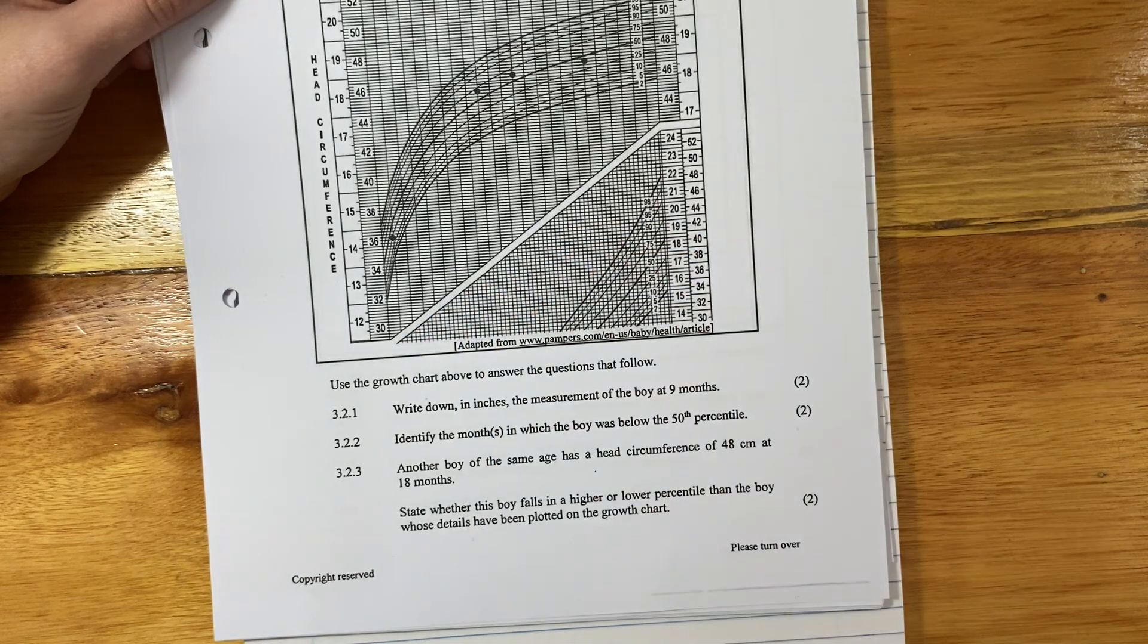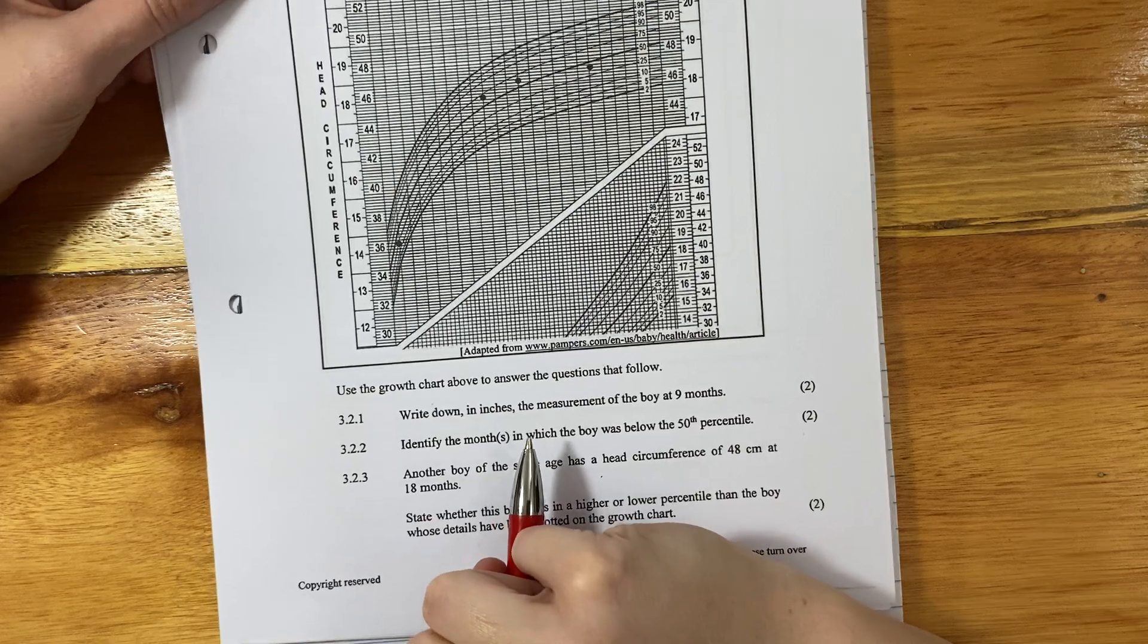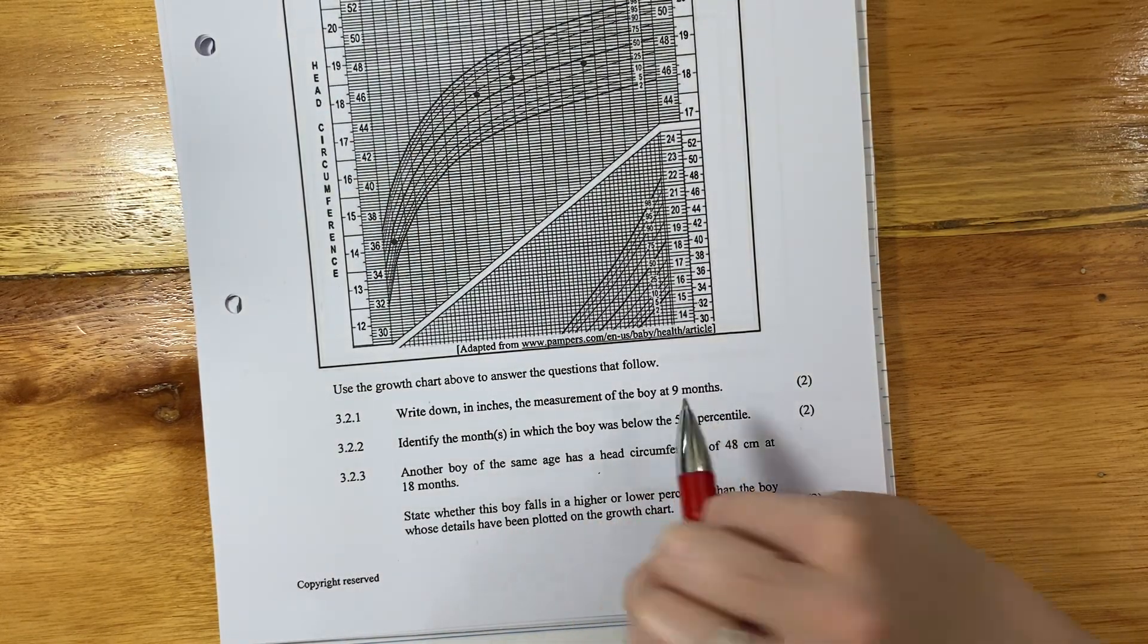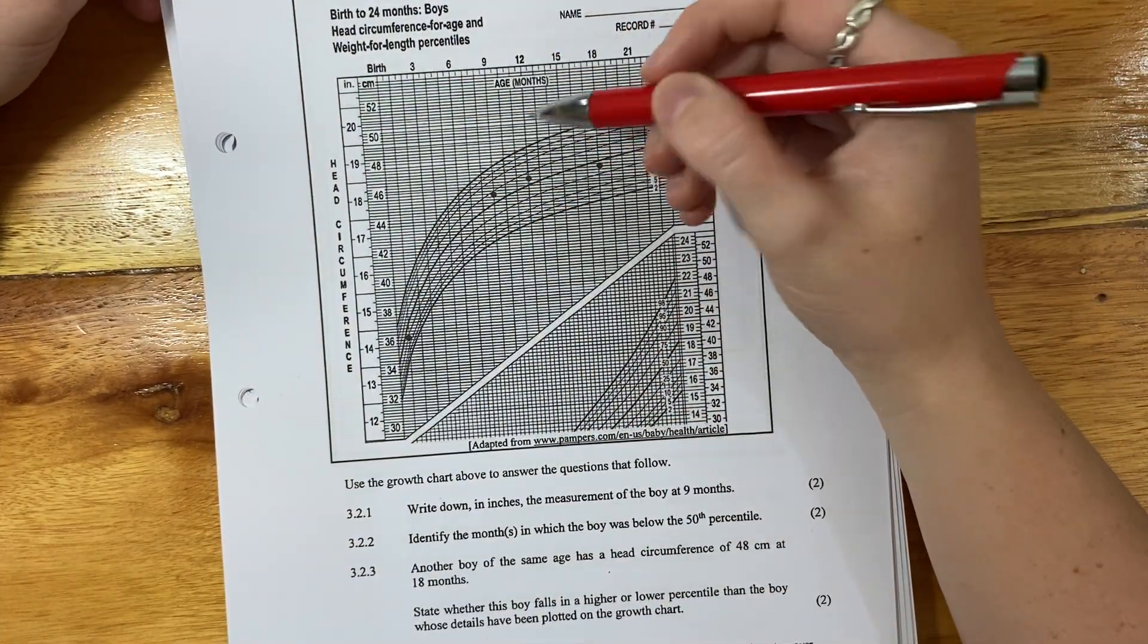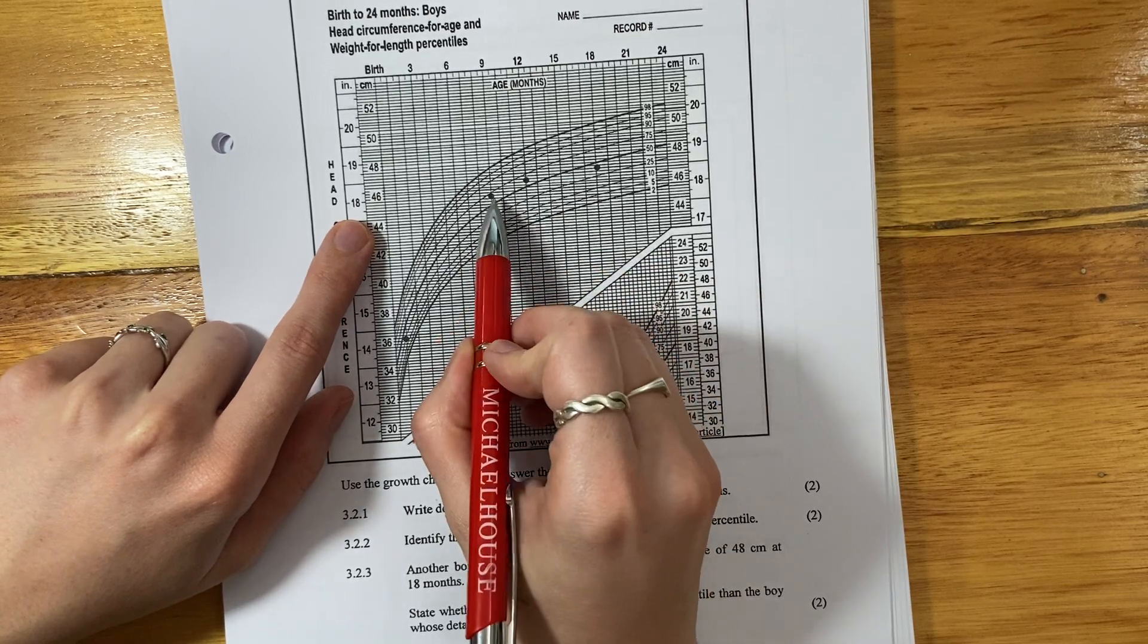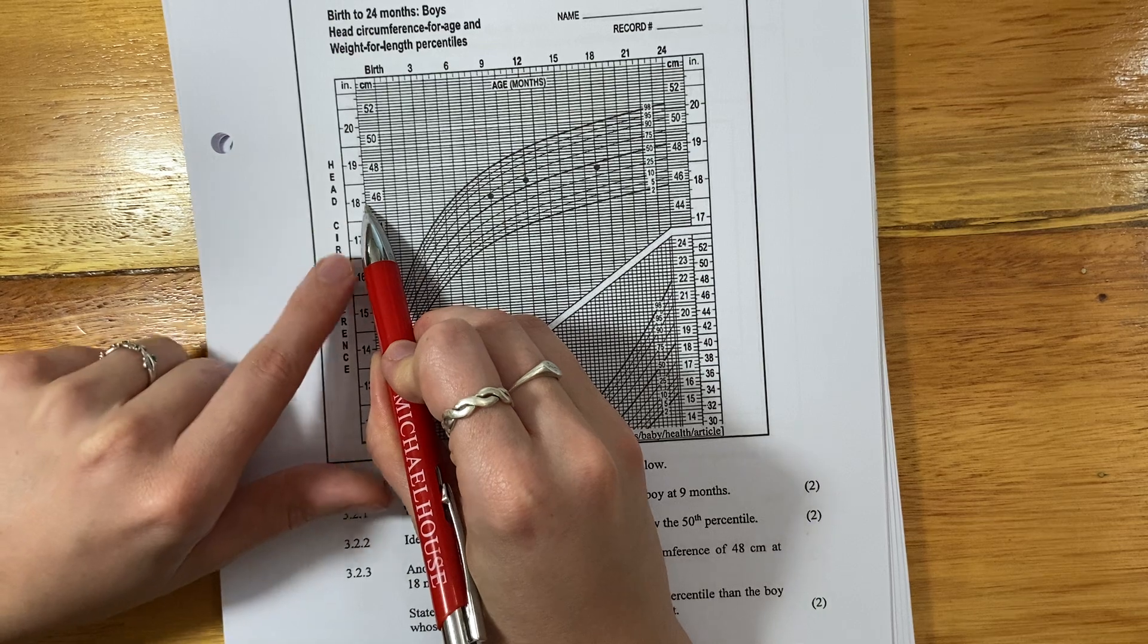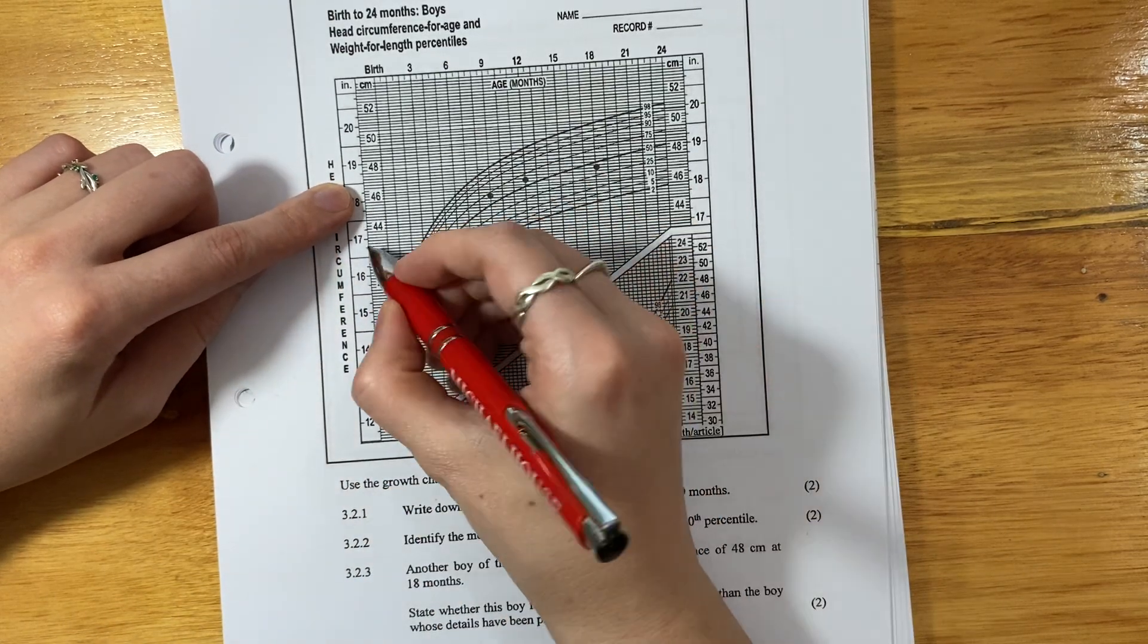Use the growth chart above to answer the questions that follow. Write down in inches, the measurement of the boy at 9 months. Okay, so it's not just any boy, it's this boy. So there's 9 months. There's this dot. Bring it across. You might need to use a ruler, but if you bring it across, you'll see that it is just under 18. Okay, now you could be thinking, how do I know exactly? Well, count, right?